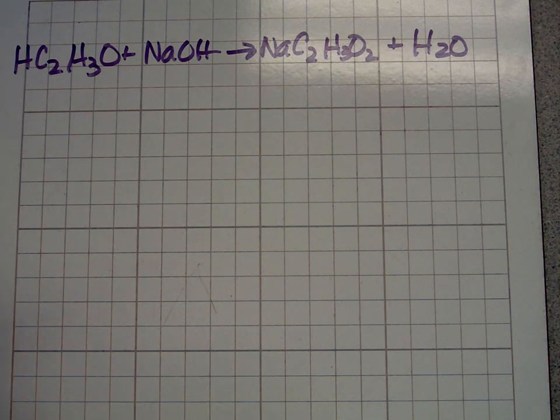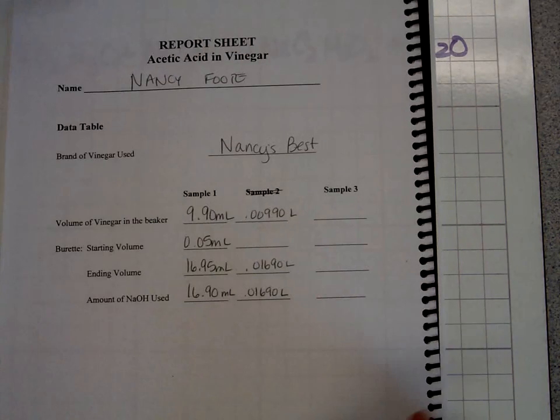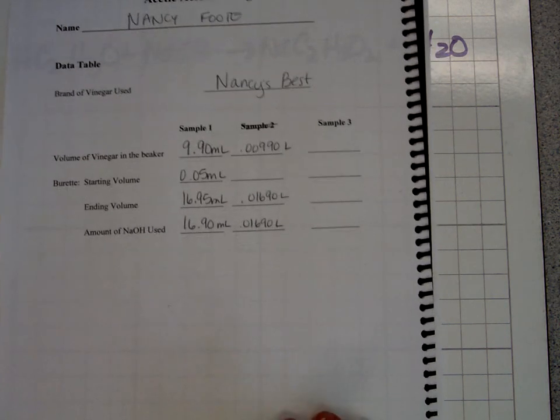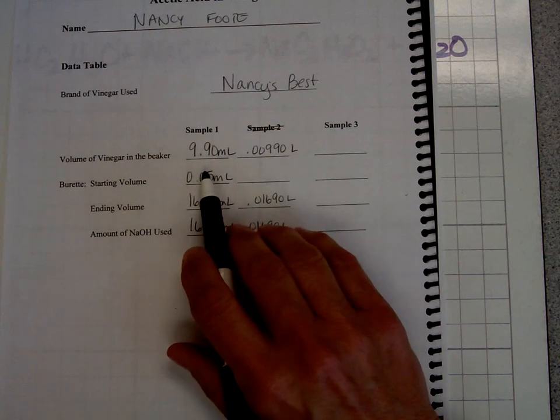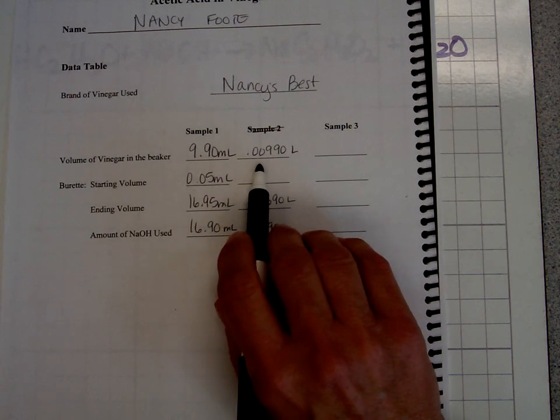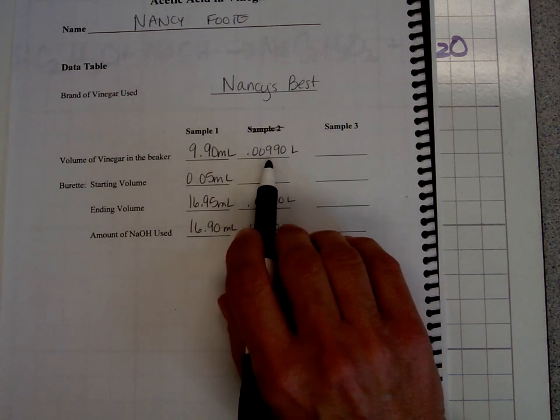Alright, so here we go. Let's first look at our data. Our data from lab yesterday says that the volume of vinegar in the beaker was 9.90 mL. We're going to want everything in liters, so we divide that by 1,000 to get 0.00990 liters.